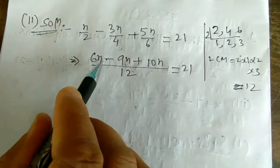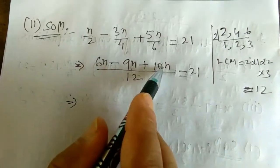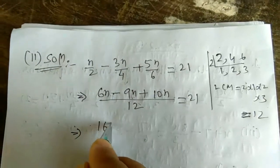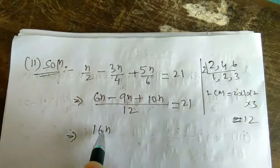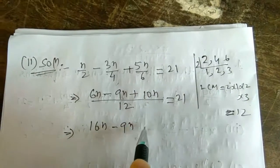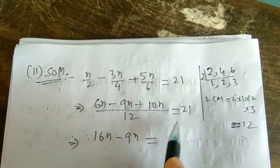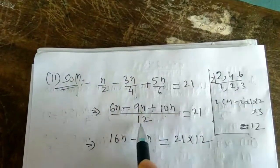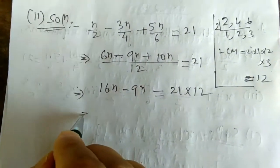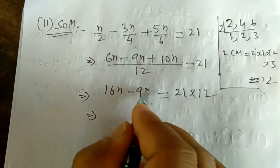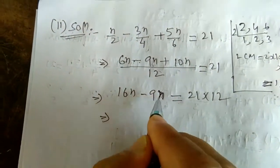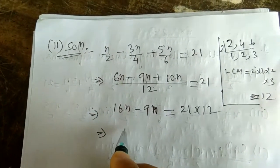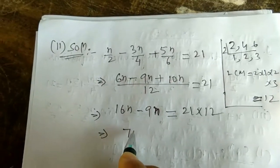So 6n + 10n = 16n, minus 9n. Then 16n - 9n = 7n. This is greater, so positive sign. Cross multiplying: 7n = 21 × 12.